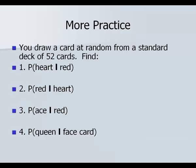Here's another one to practice. We're drawing a card at random from a standard deck. We want to find the probability of a heart given that the card was red. That line means 'given.' So the probability of being a heart and red is 13 cards out of the probability of being just red, which is 26 cards. So 13 out of 26 is one-half.